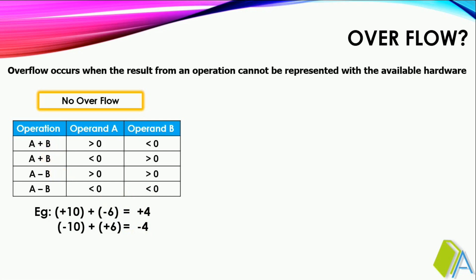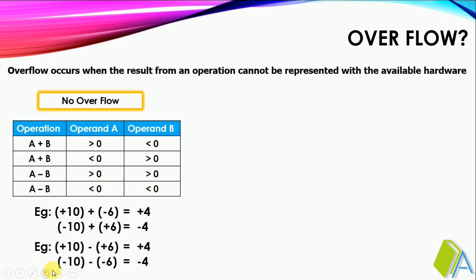In subtraction, if we subtract a positive number from a positive number, or subtract a negative number from a negative number, we don't have any overflow. For example, subtracting 6 from 10, or subtracting minus 6 from minus 10 — in both cases there is no overflow.